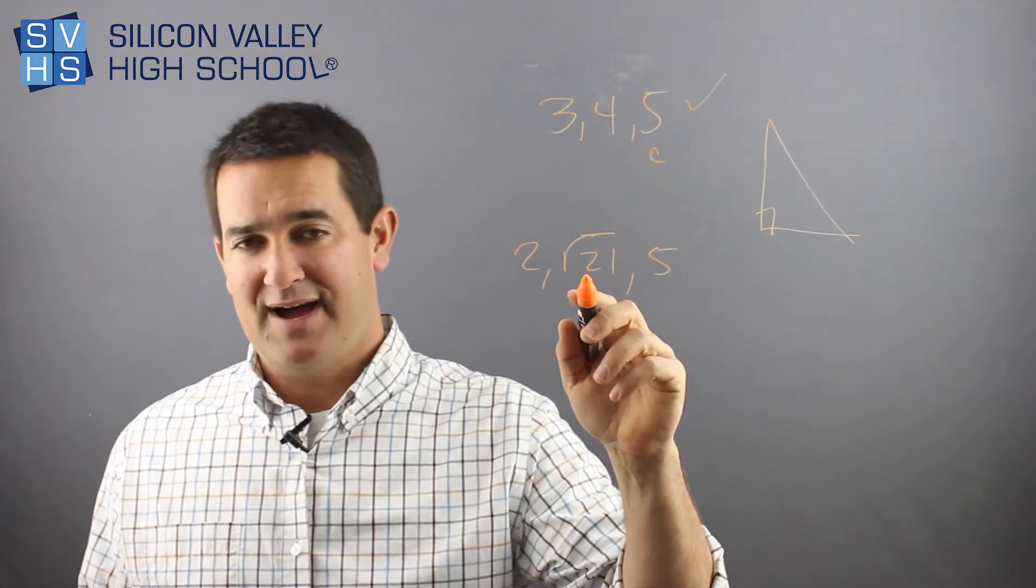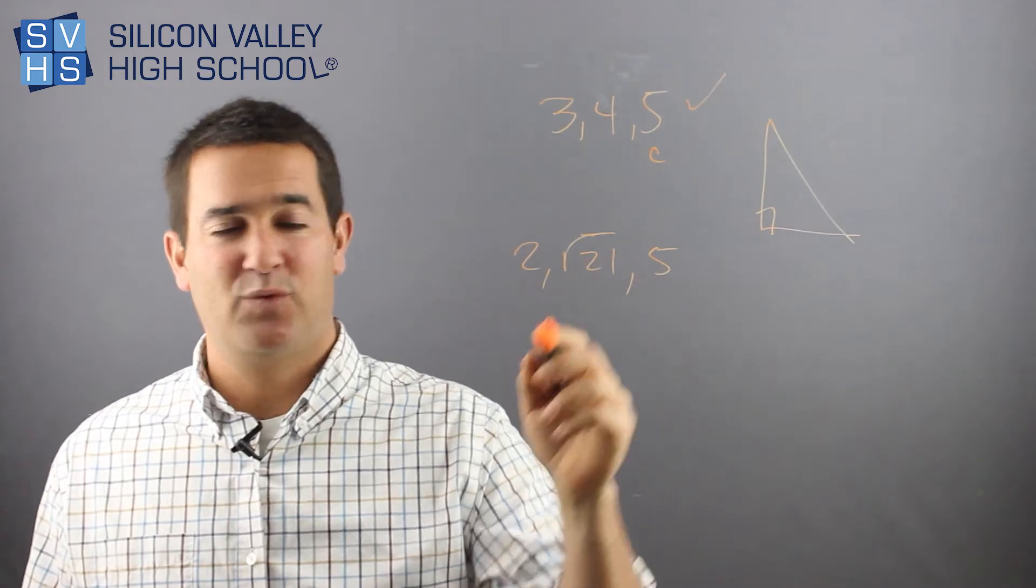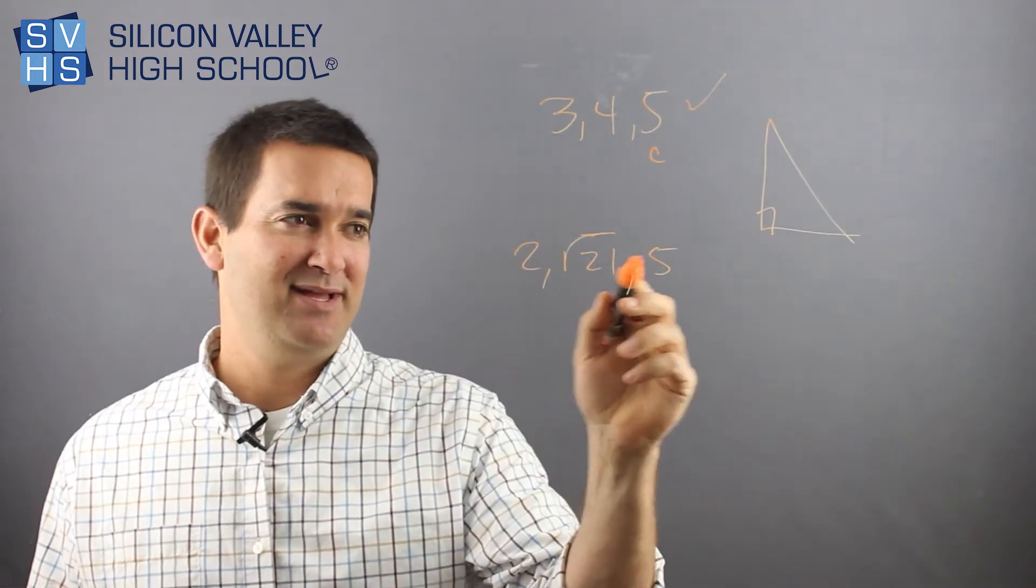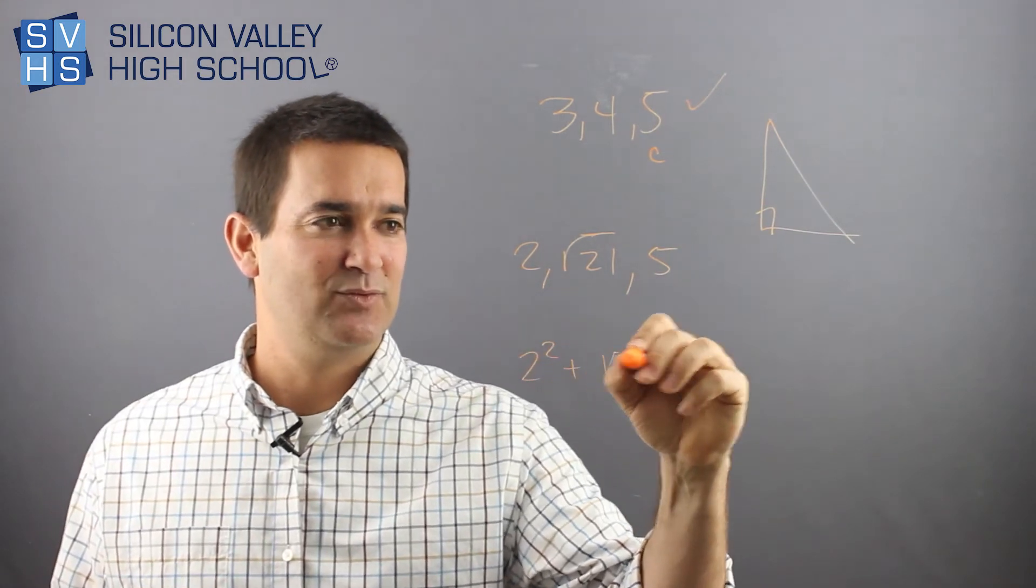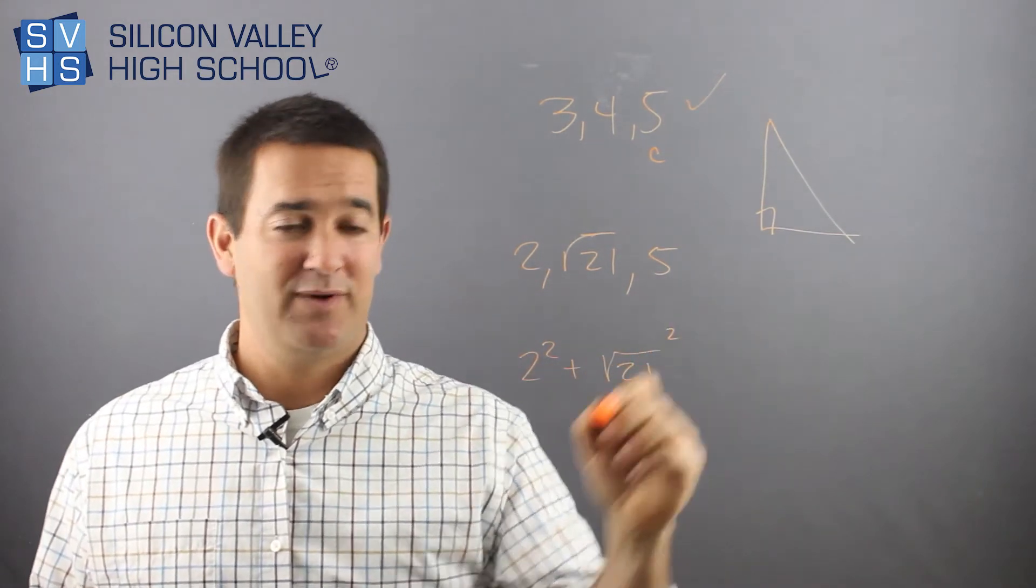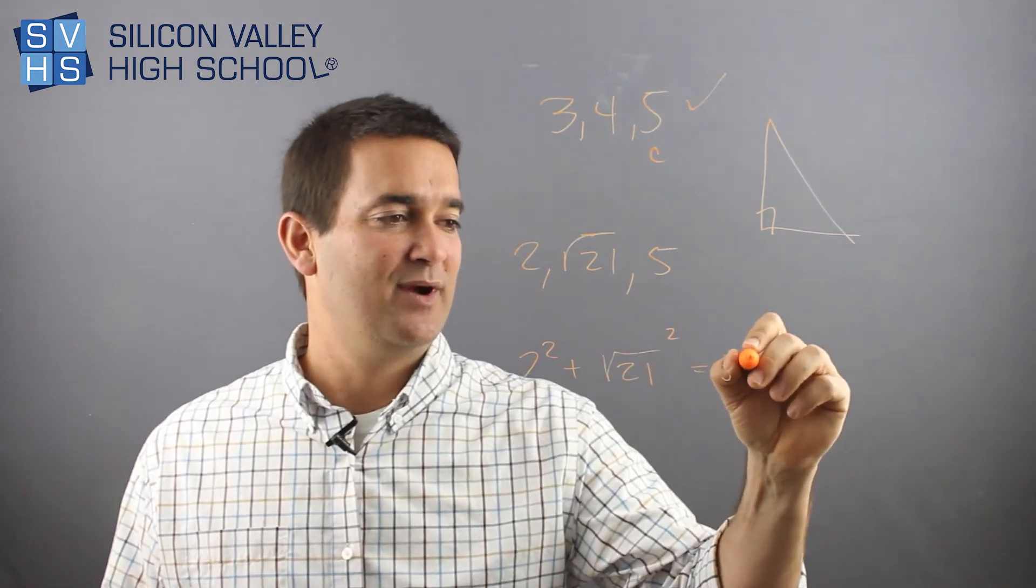Remember, root 25 is five. So root 21 has to be smaller than that. So I'm going to call him a, b, and c. And let's do it. So you have two squared plus, this looks weird, root 21 squared. What is that? Equals five squared.